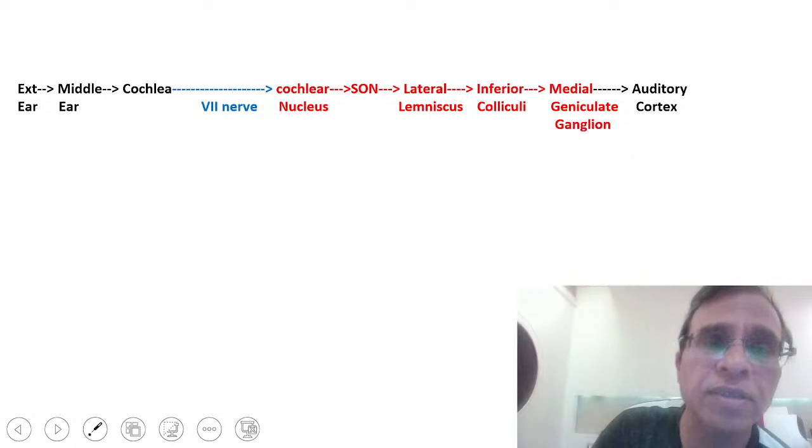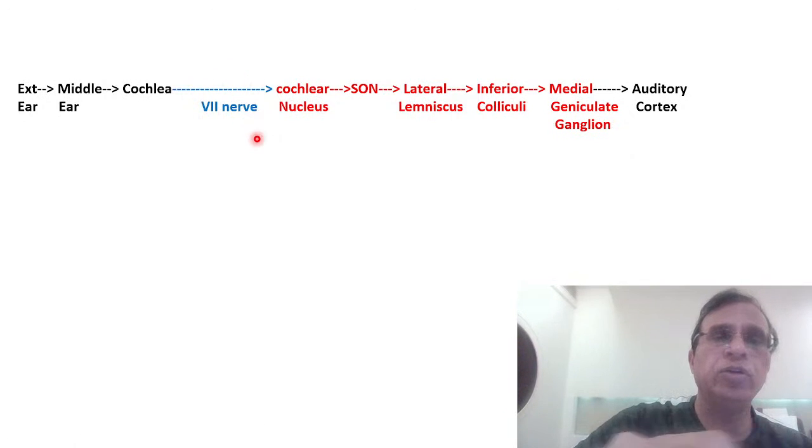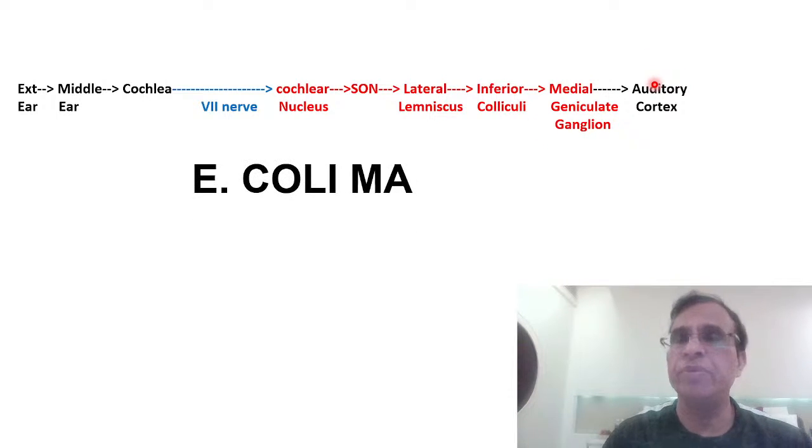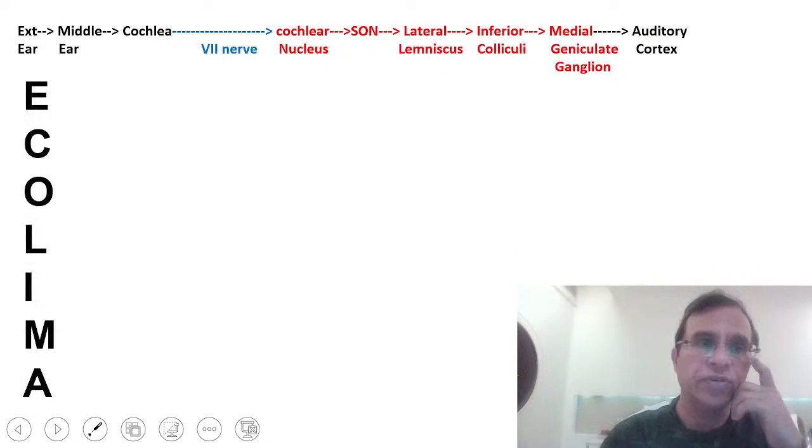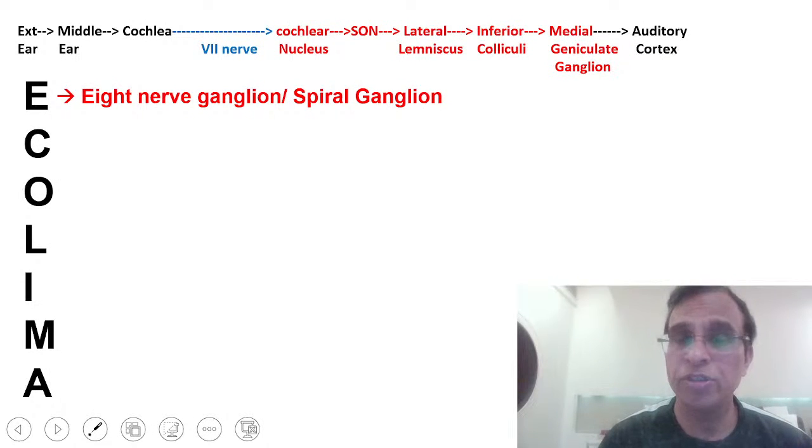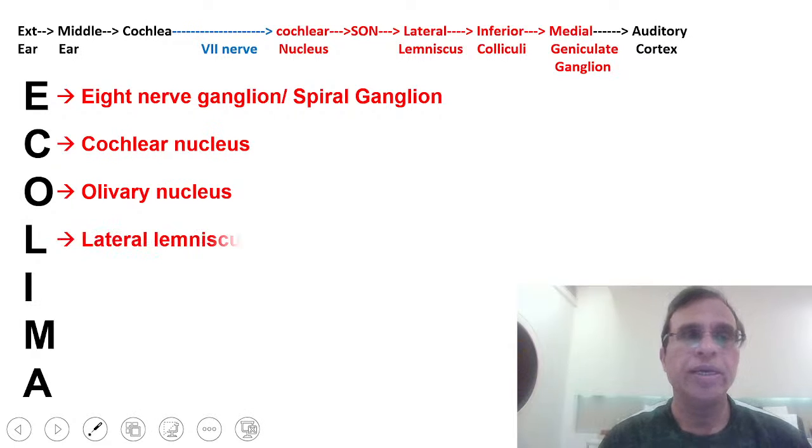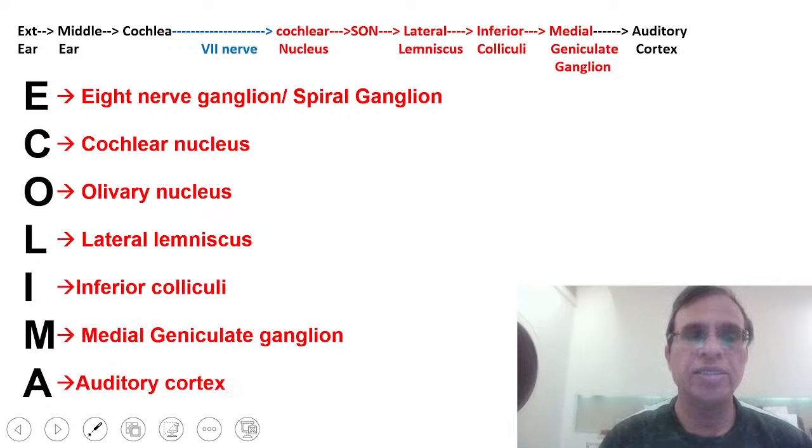From the eighth nerve where the spiral ganglion lies, it goes to cochlear nucleus, superior olivary nucleus, lateral lemniscus, inferior colliculi, medial geniculate ganglion, auditory cortex. There's a very famous mnemonic: E COLI MA. E stands for eighth nerve spiral ganglion, C for cochlear nucleus, O for olivary nucleus, L for lateral lemniscus, I for inferior colliculi, M for medial geniculate ganglion, and A for auditory cortex.